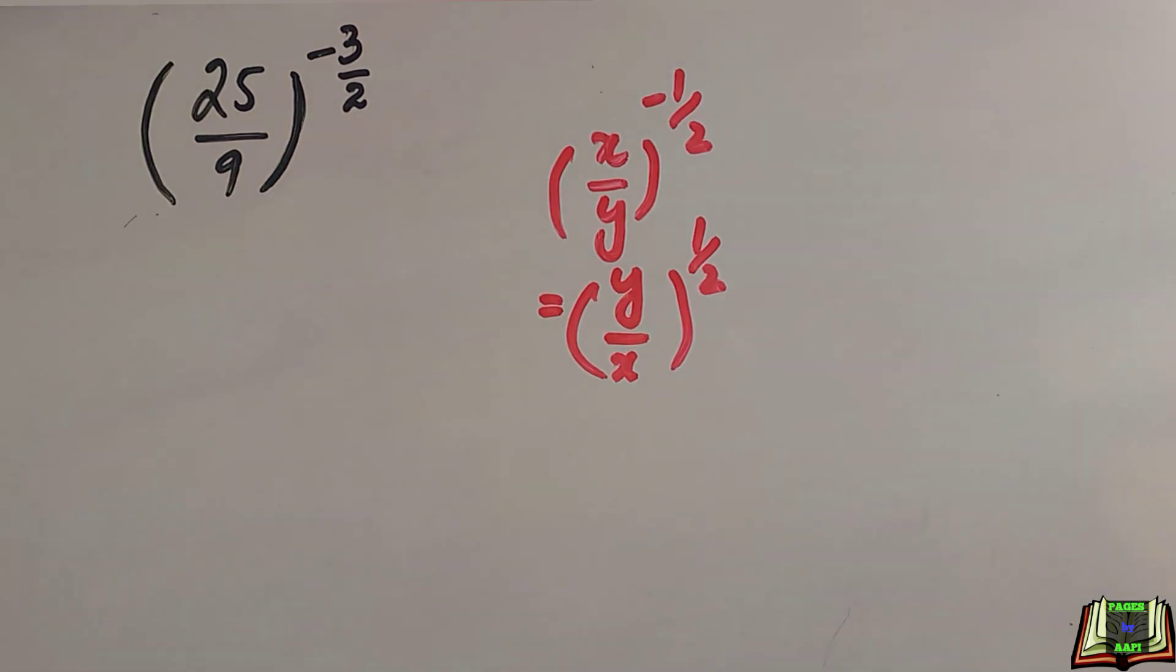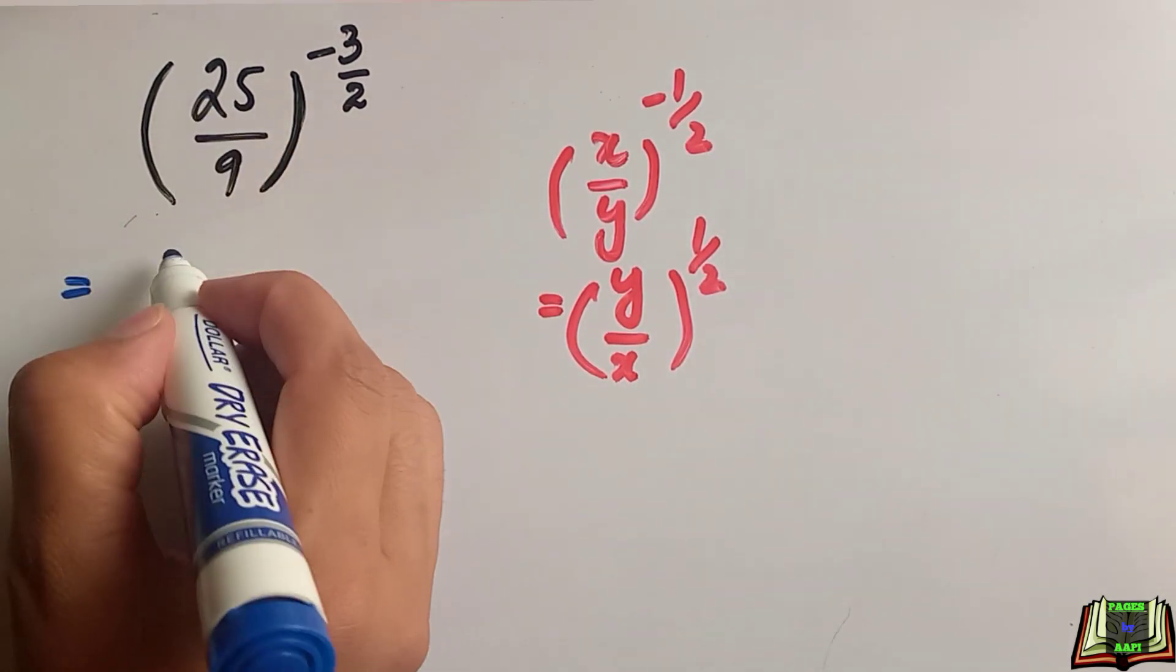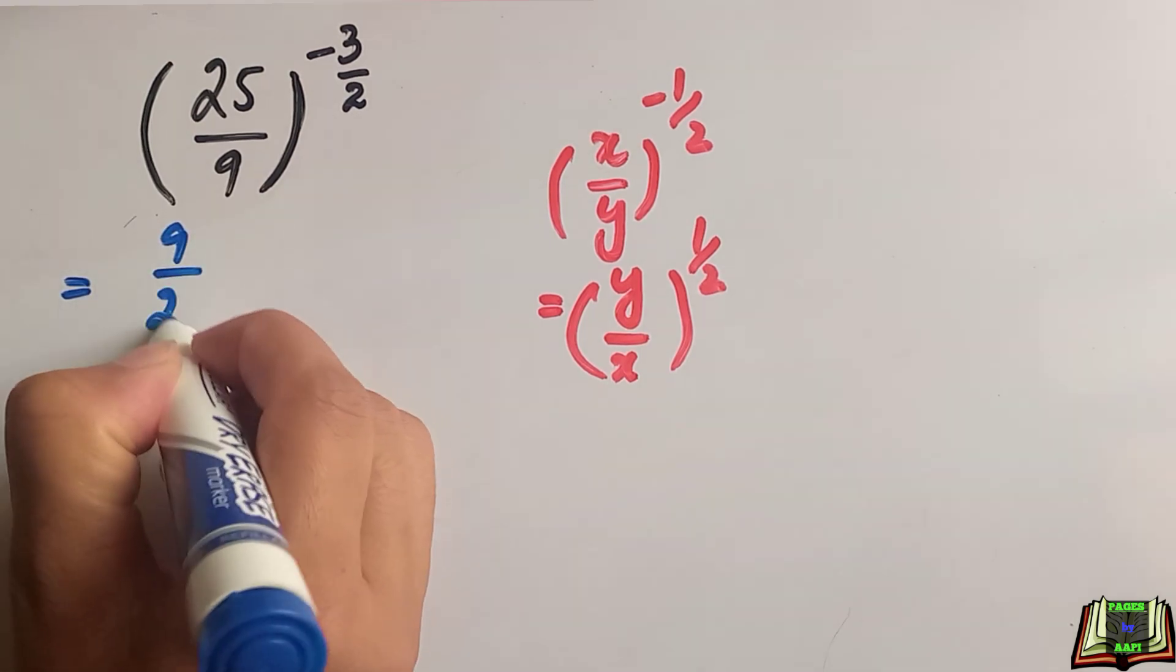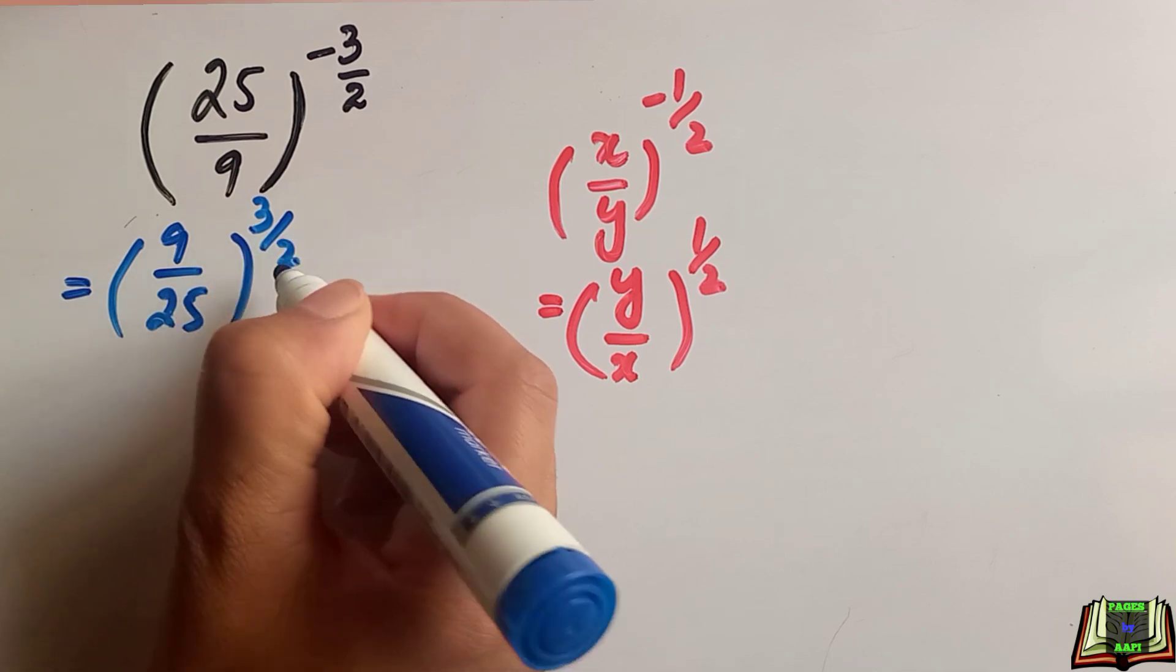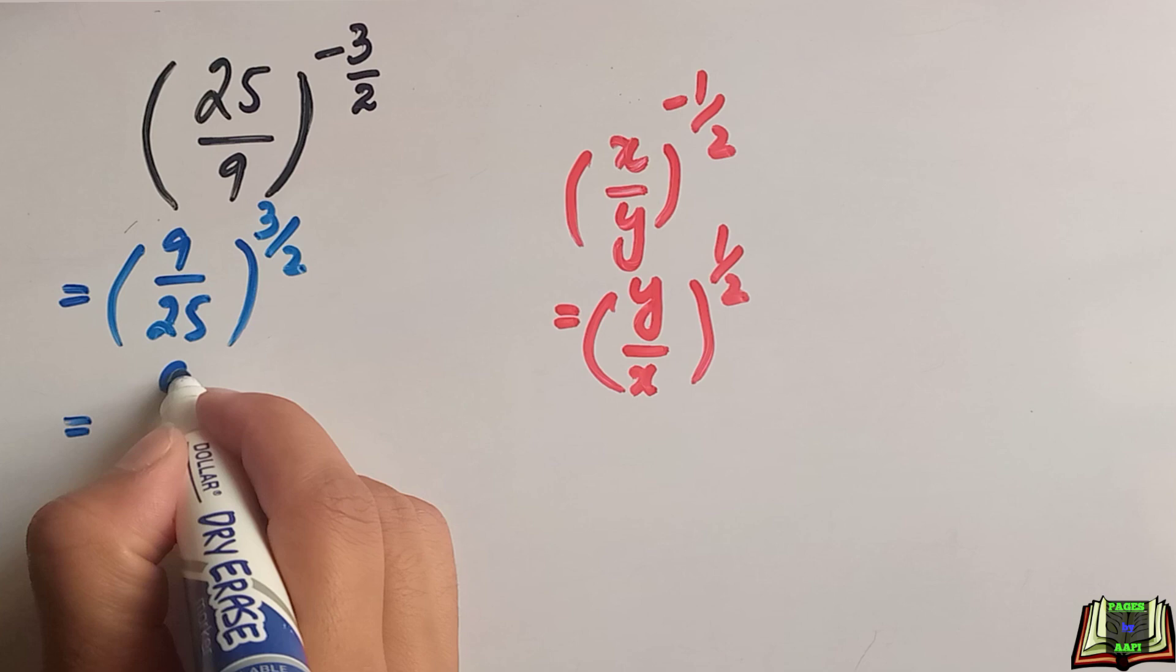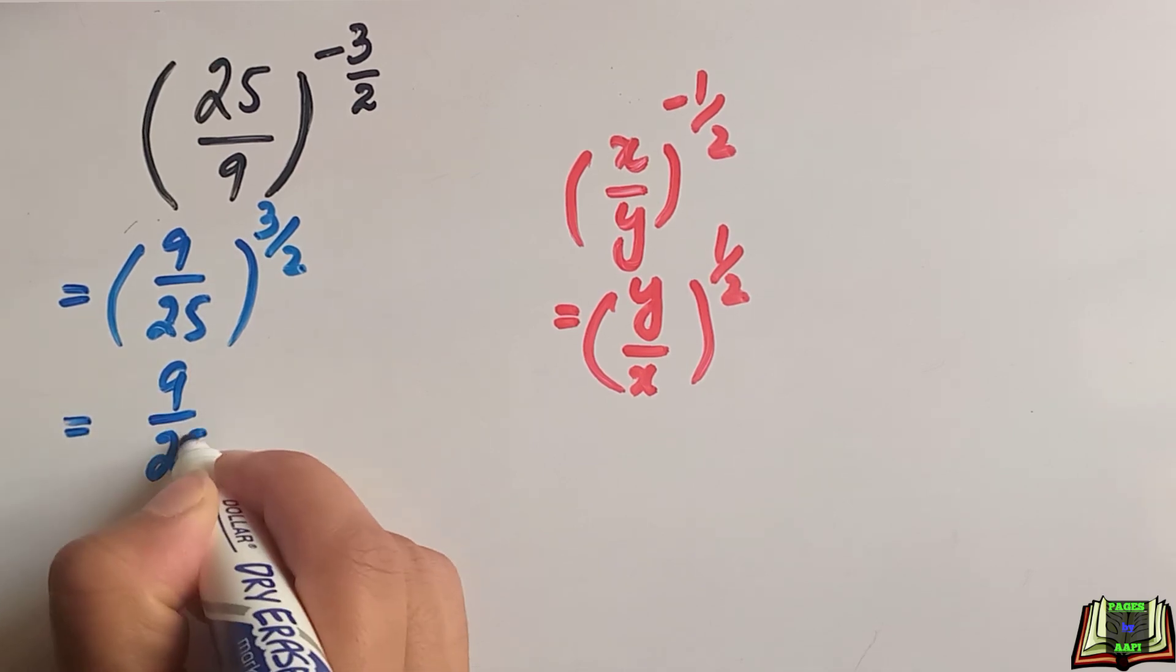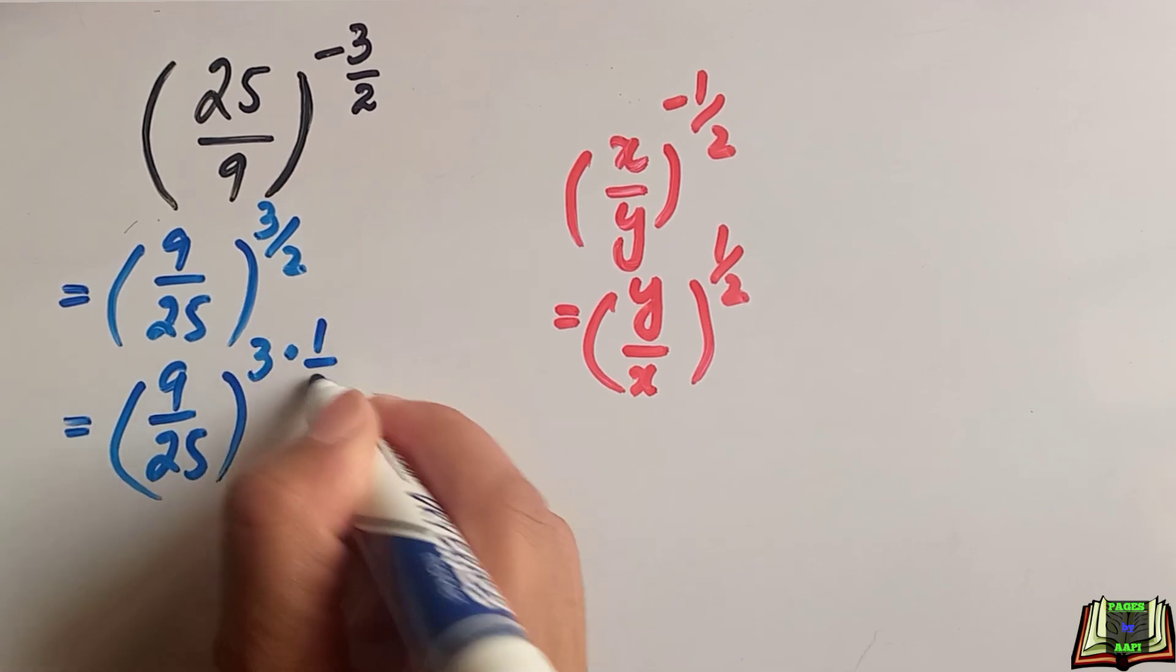With the help of this we can write our expression by taking reciprocal. It will be equal to 9 over 25 to the power 3 by 2. Now the power becomes positive. In the next step we are going to rewrite our power as 3 by 2 will be written as 3 times 1 over 2.